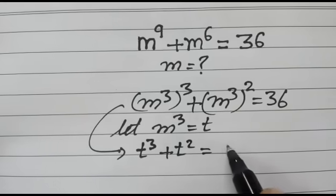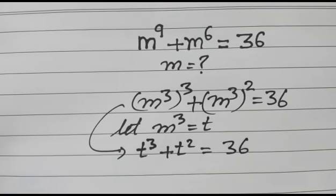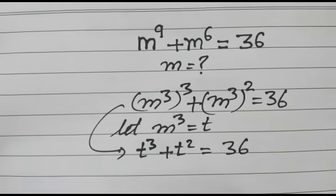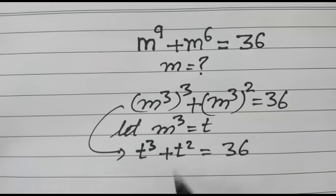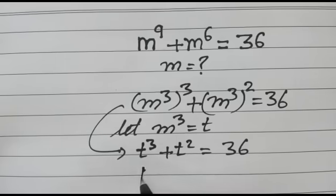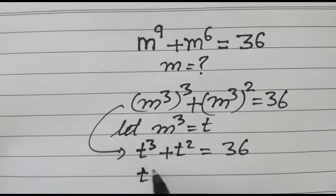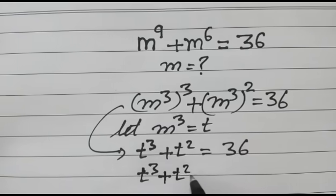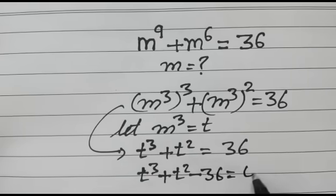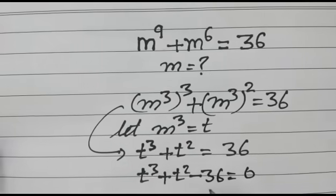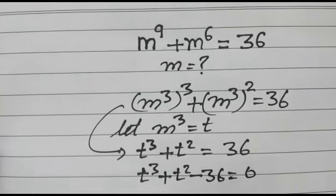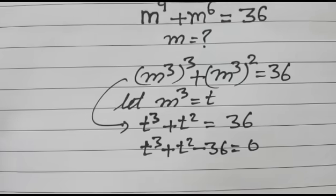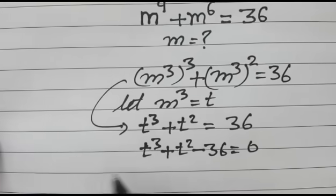So t to the power 3 plus t squared minus 36 is equal to 0. We will factorize it using the remainder theorem.